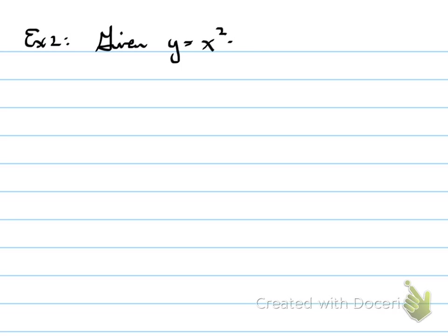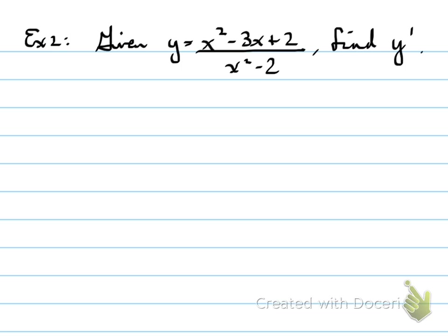Example number two: given a function that is a quotient, find the derivative. In this case, we don't have the luxury of dividing through. Some people may think to use long division or synthetic division — synthetic division won't work here, and long division would leave a remainder whose derivative we'd also need. Best bet: let's use the quotient rule.